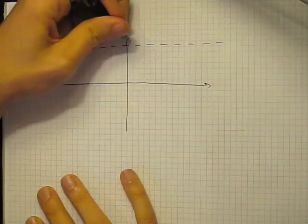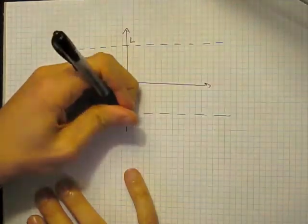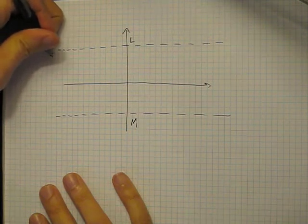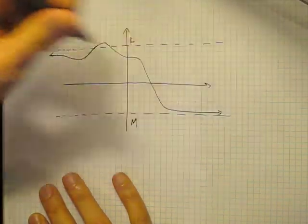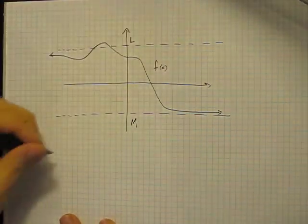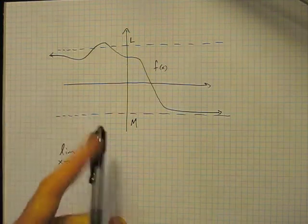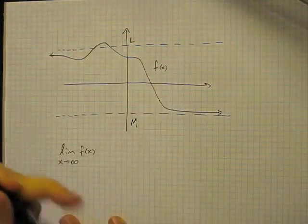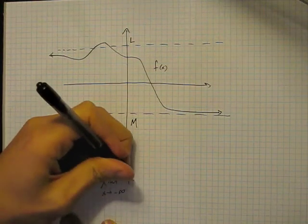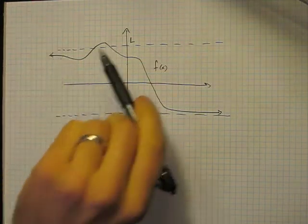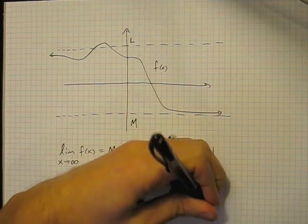Whereas a function can have infinitely many vertical asymptotes, a function can only have at most two horizontal asymptotes. So here's a picture of a function that has two horizontal asymptotes. This is the graph of f, and in each of these cases, the limit as x goes to infinity of f — as x goes to infinity, the trend of the graph is to be at height m — and the limit as x goes to minus infinity of this function is equal to L. So when we go off in that direction, the trend of the graph is to approach the height L.